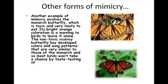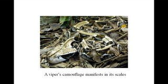Another example of mimicry involves the monarch butterfly, which is toxic and very unpleasant to eat. Its bright orange colouration is a warning to birds to leave it alone. The non-toxic viceroy butterfly has developed a colour and wing pattern very similar to that of the monarch, so birds won't take a chance tasting it.